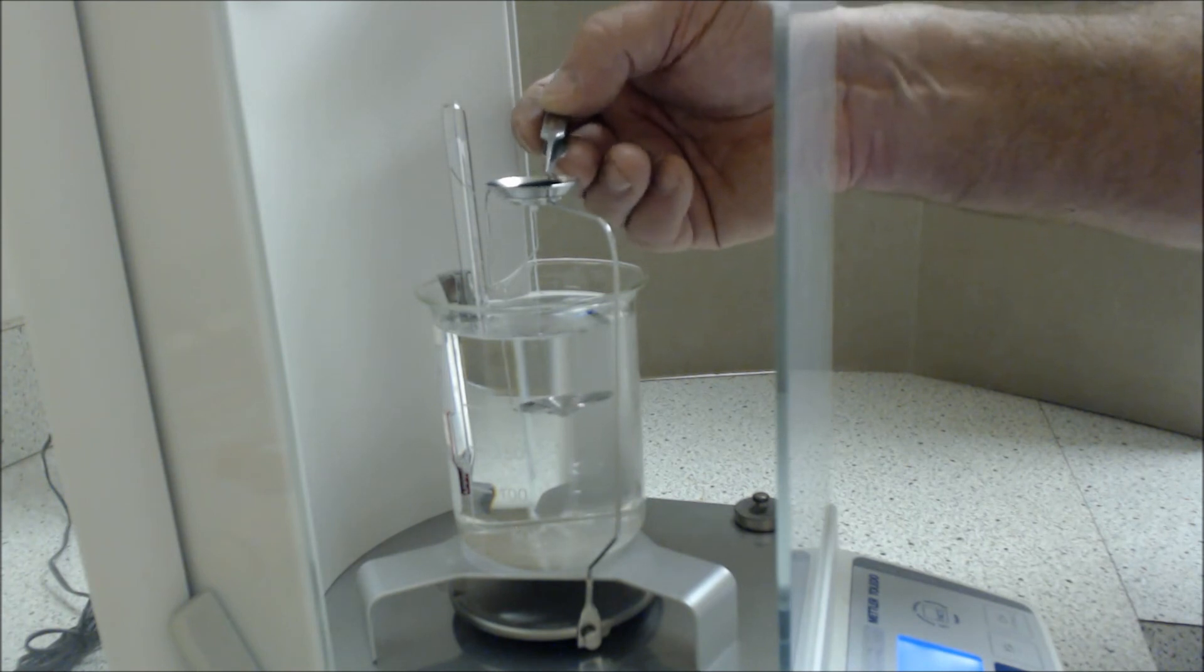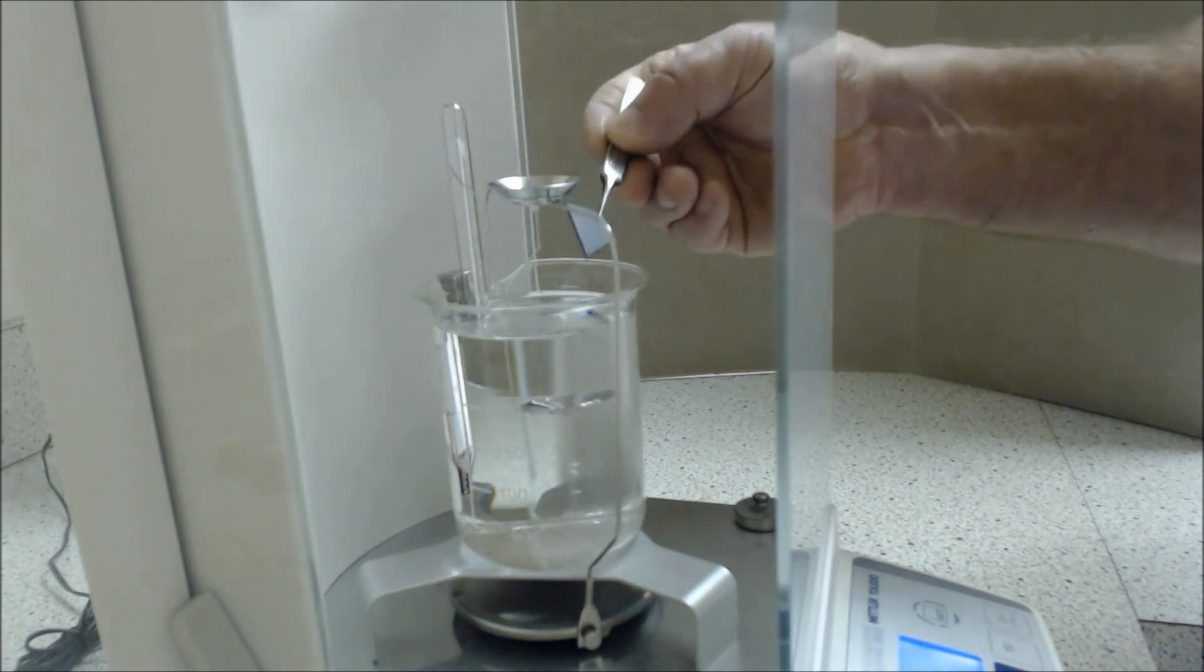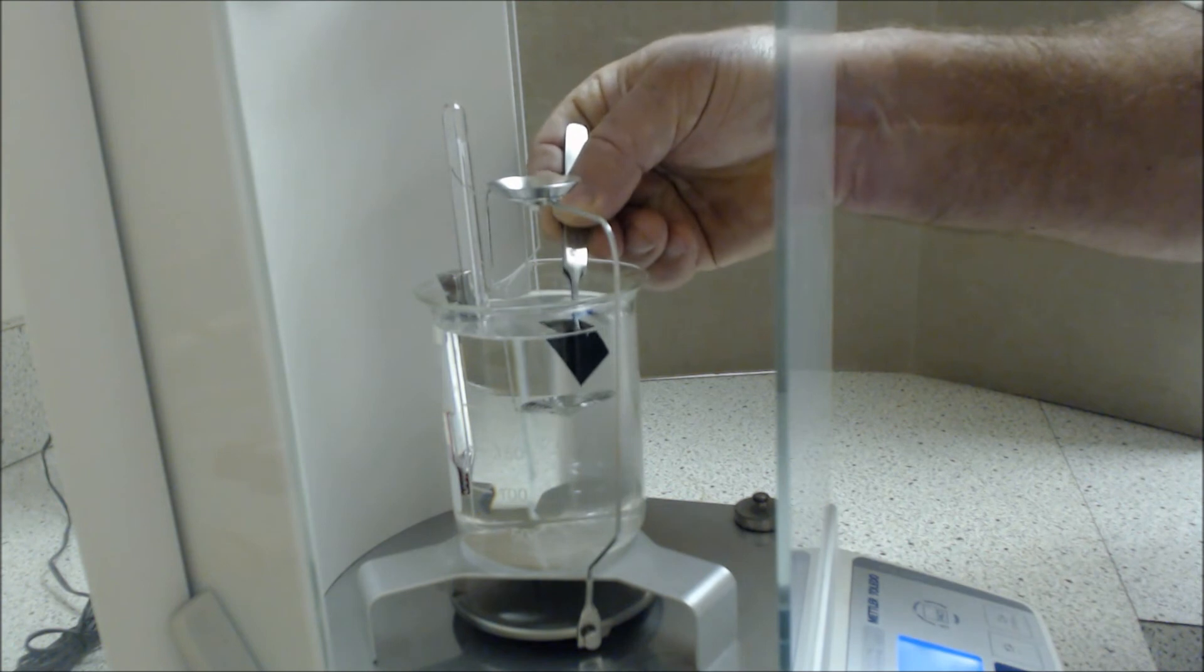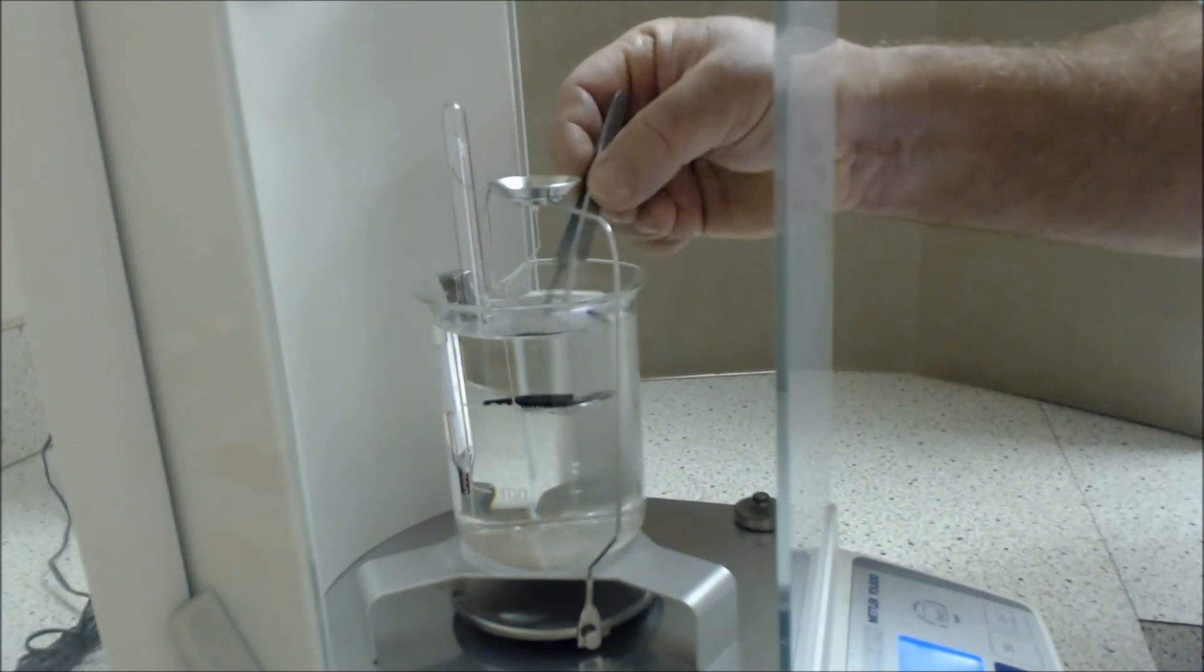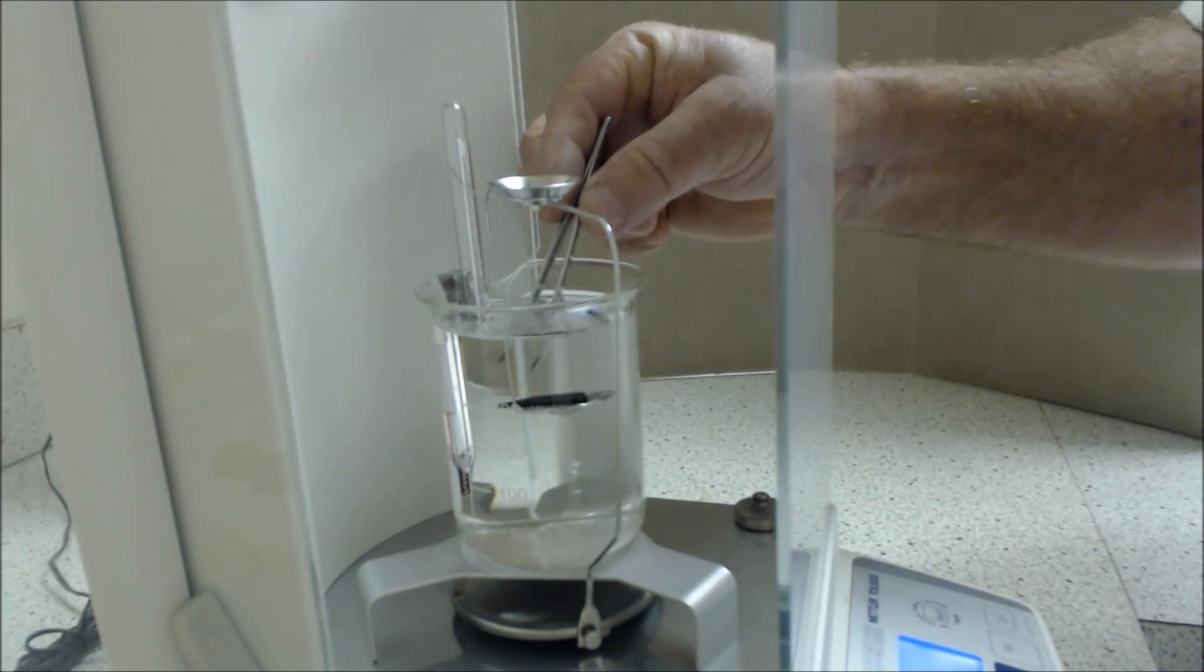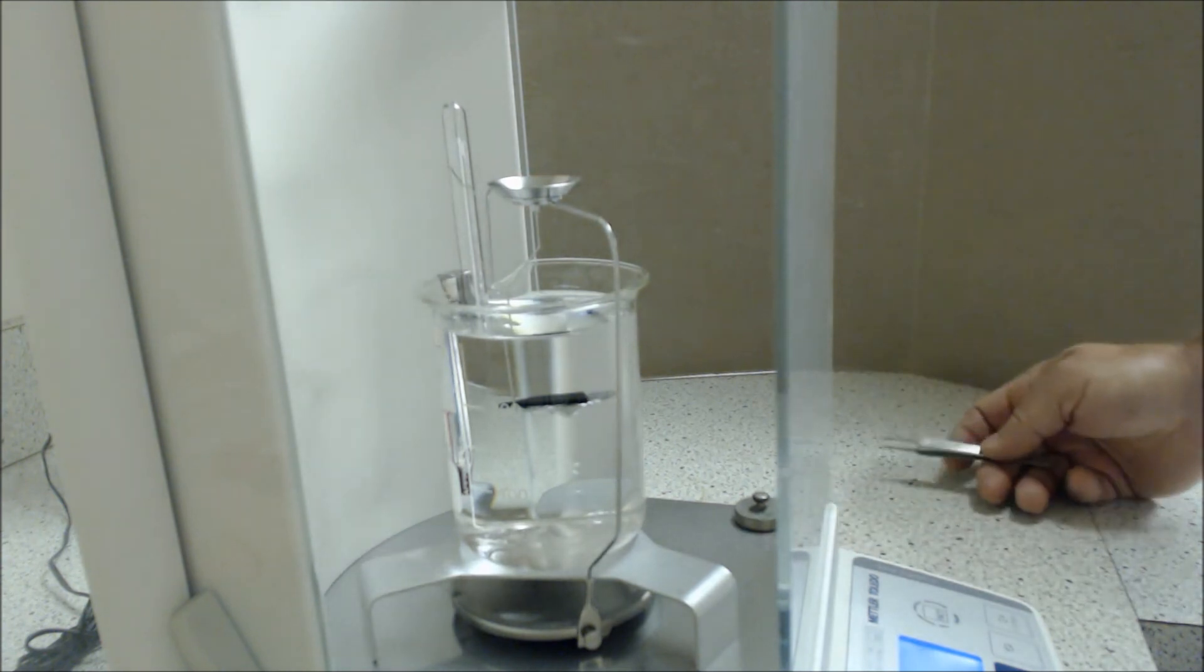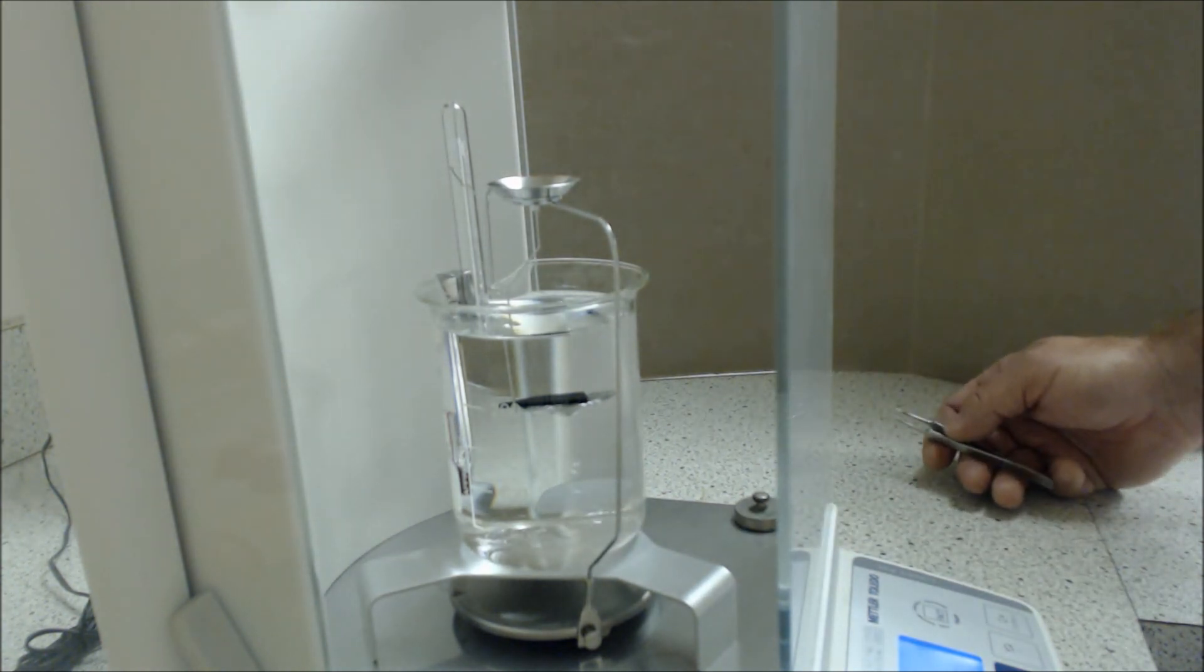The next item, what you do is take the specimen off and then immerse it in the alcohol on the hanger. You try to centralize it, wait five seconds, and then subsequently record the mass.